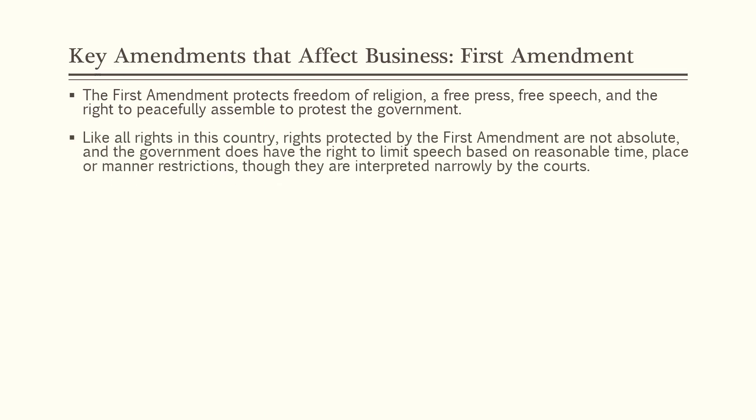Like all rights in this country, rights protected by the 1st Amendment are not absolute. The government does have the right to limit speech based on reasonable time, place, or manner restrictions, though they are interpreted narrowly by the courts. If the government tries to regulate the content of speech, it is subject to the highest court scrutiny available — strict scrutiny. Content-neutral restrictions like time, place, or manner restrictions, if truly content-neutral, are subject to intermediate scrutiny. We'll talk about strict scrutiny and intermediate scrutiny in a later slide.